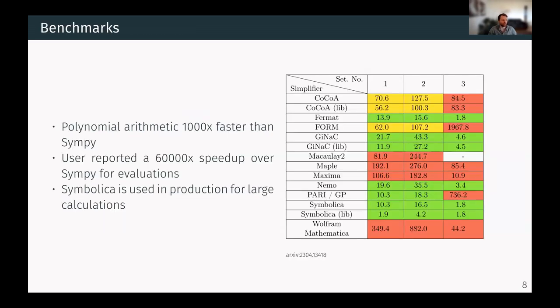So Symbolica is about a thousand times faster than SymPy, but it could be infinitely more if you make the problem larger, because at some point you will run out of memory with SymPy. Here on the right, there's a paper where many symbolic toolkits have been tried for rational polynomial algebra. And as you can see, Symbolica is doing very well here. And it's also being used in practice for calculations like this.